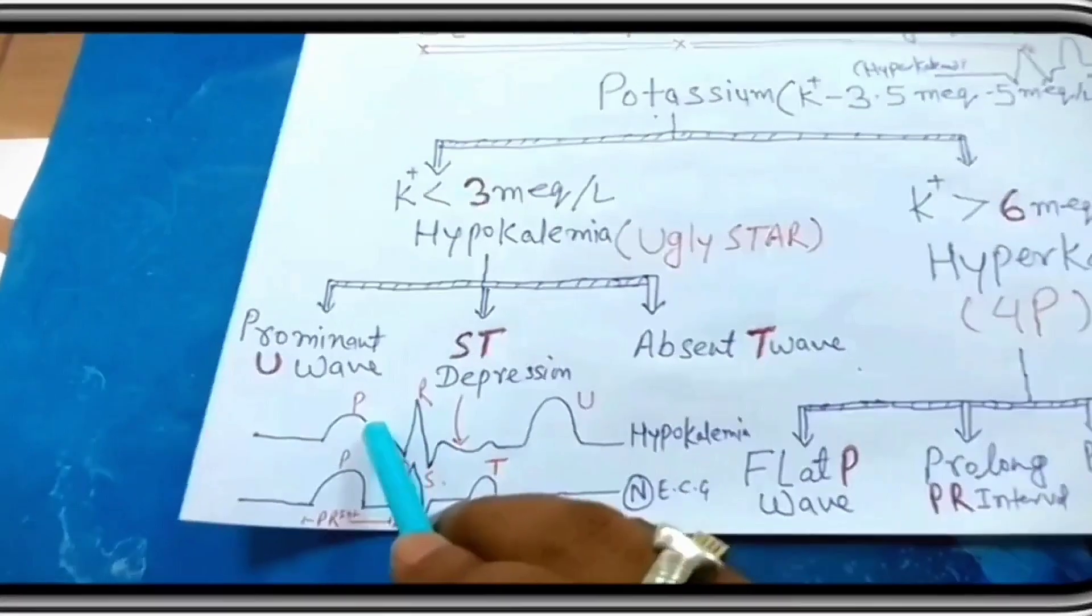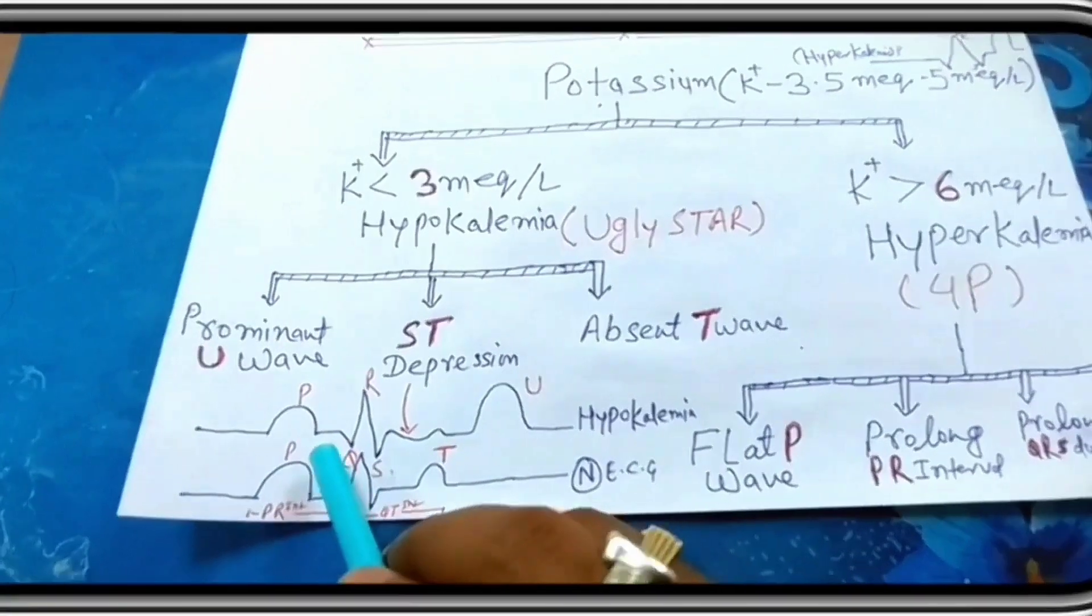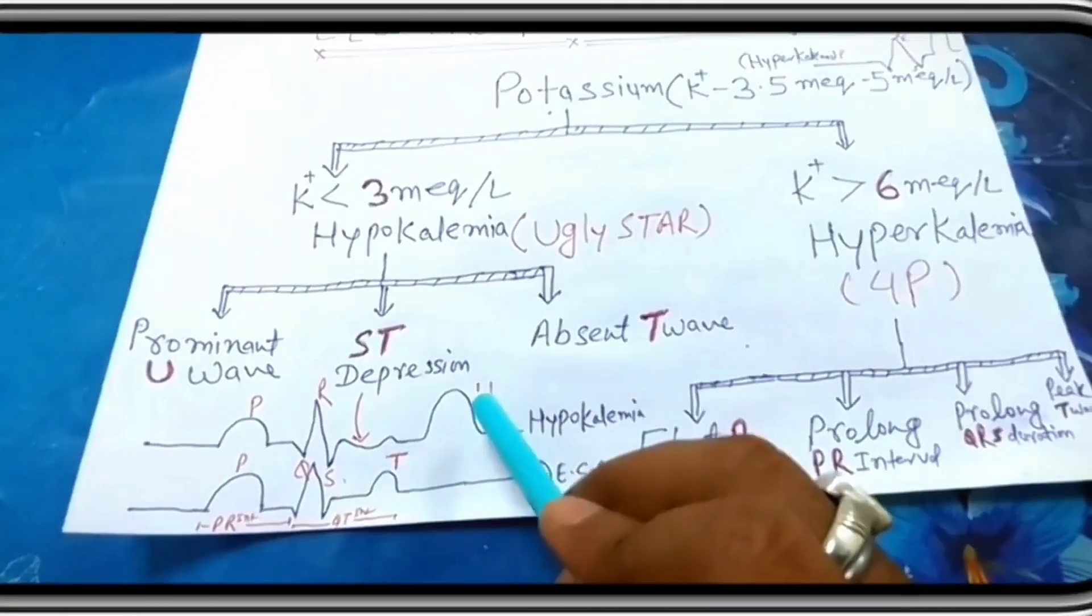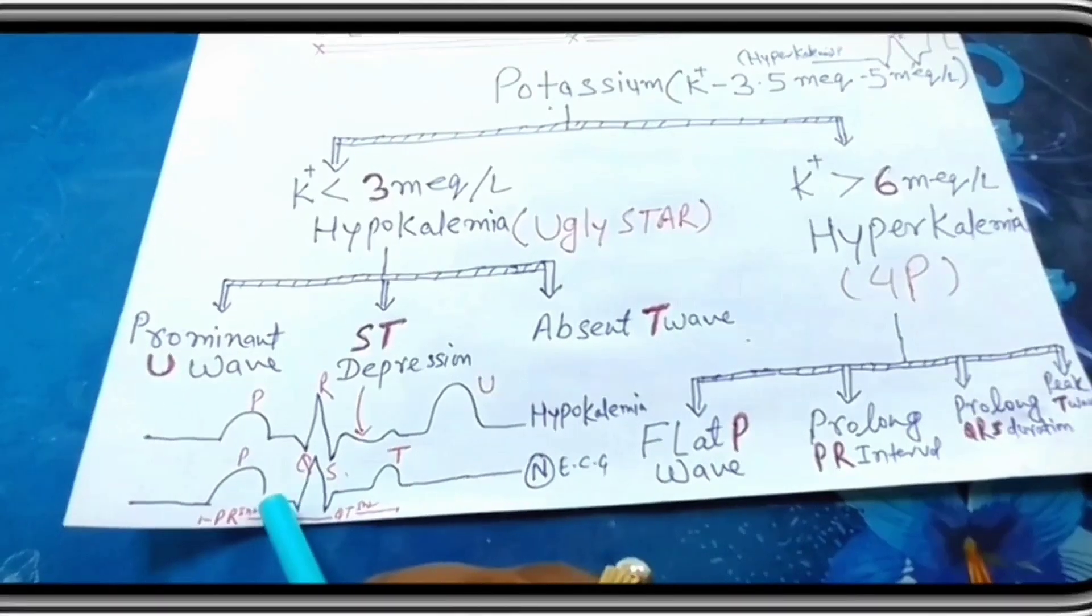This is the ECG of hypokalemia: P wave, QRS complex, ST depression, prominent U wave. This is normal ECG downward.